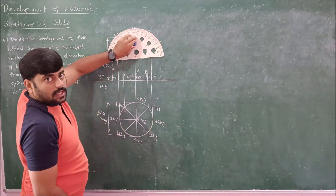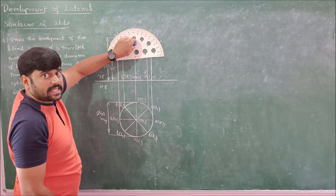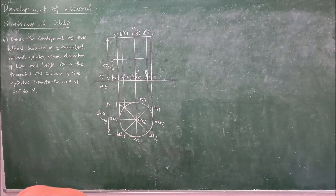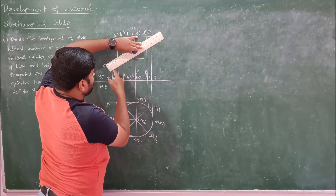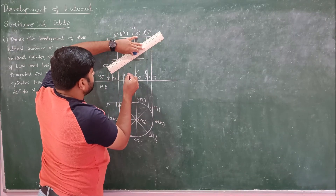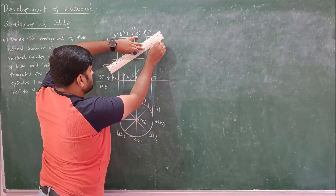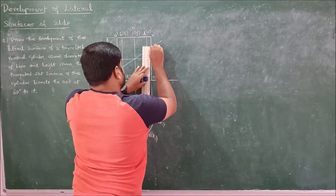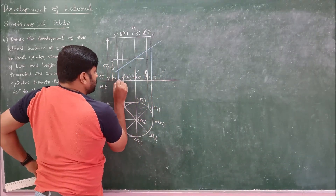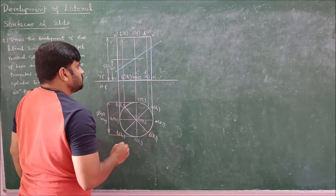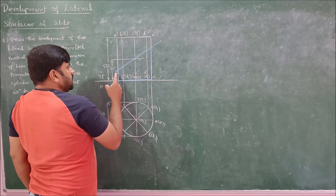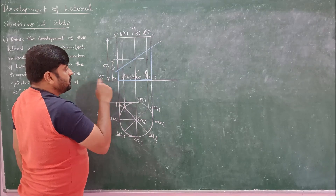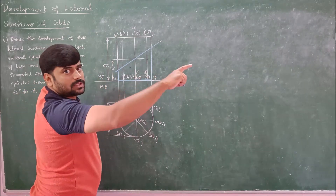So you will get a cutting plane like this. Make a note: the inclination is given with respect to the axis. Mark the cutting plane making an angle of 30 degrees to the base or 60 degrees to the axis. The cutting plane is not intersecting the base at either the bottom or at the apex faces. Therefore, I can use only parallel lines to complete the development.